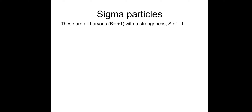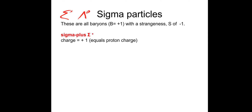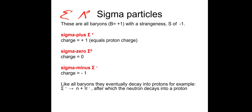Some information on sigma particles — you'll need to make notes. Sigma particles may appear as the Greek letter sigma or abbreviated on an exam. They all have a strangeness of minus 1 and a baryon number of plus 1. Sigma plus: charge plus 1, strangeness minus 1, baryon number plus 1. Sigma zero: baryon number plus 1, strangeness minus 1, charge zero. Sigma minus: baryon number plus 1, strangeness minus 1, charge minus 1. Like all baryons, they eventually decay into protons.